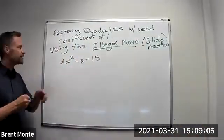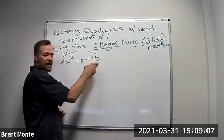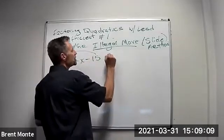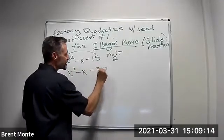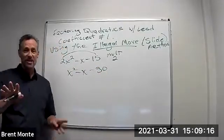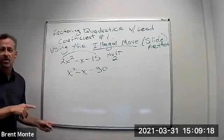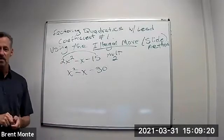So here's what we do. We look at the 2 and the 15. We actually multiply this negative 15 times the 2. So I'm going to multiply it by 2, and I get x squared minus x minus 30. And I know what you're thinking. You're thinking, wait, you can't do that. That's illegal, which is exactly why we call it the illegal move.